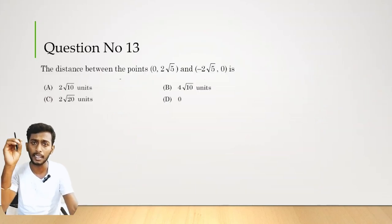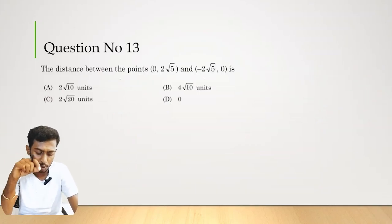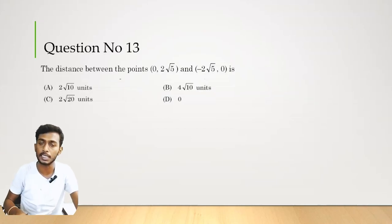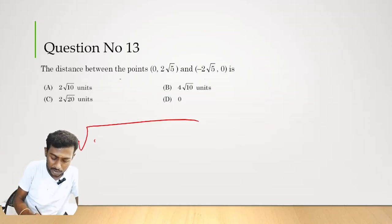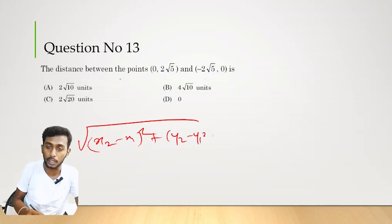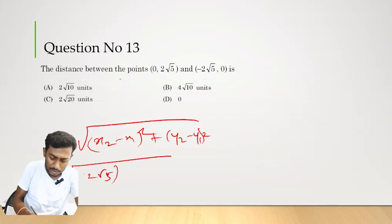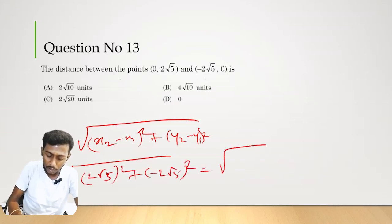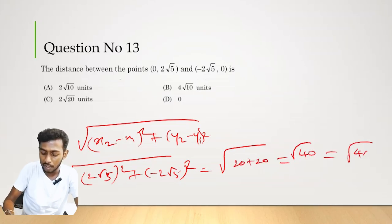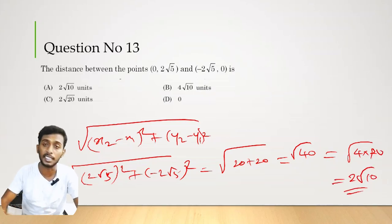Question number 13. The distance between points (0, 2√5) and (−2√5, 0). Using distance formula: √[(−2√5 − 0)² + (0 − 2√5)²] = √[20 + 20] = √40 = √(4 × 10) = 2√10. Therefore option A is the correct answer.